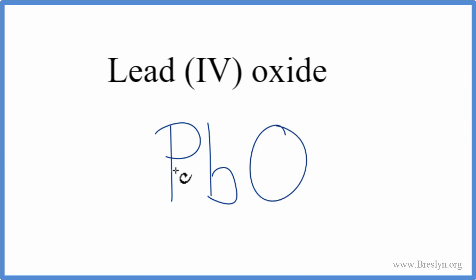So lead, that's a metal, and then oxygen, that's a non-metal. When we have this metal and a non-metal, that means this is an ionic compound, and we'll need to consider the charges on the lead and then on the oxygen.